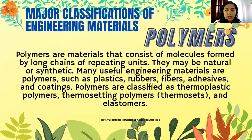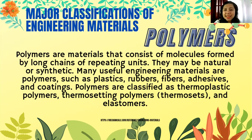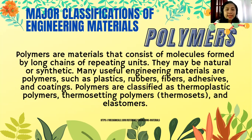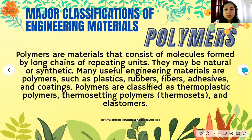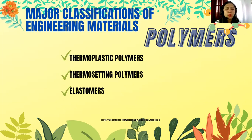The second major classification of engineering materials is polymers. Polymers are materials consisting of molecules formed by long chains of repeating units. They may be natural or synthetic. Many useful engineering materials are polymers such as plastics, rubbers, fibers, adhesives, and coatings. Polymers are classified as thermoplastic polymers, thermosetting polymers, and elastomers.